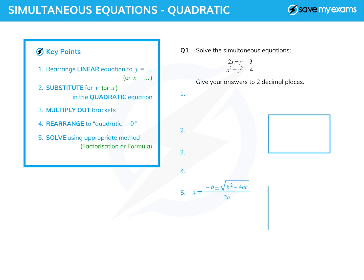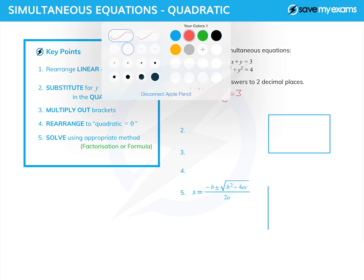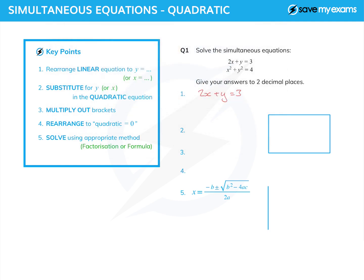Right, so let's actually do this question. We're going to take the linear equation, so that's 2x plus y equals three. It's called linear because that would be the equation of a straight line. We're going to rearrange it to give y equals, because we can do that very simply by subtracting 2x from both sides, which gives me y equals three minus 2x.